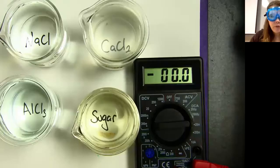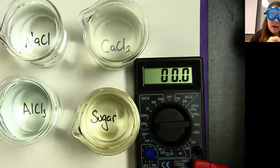So I have here four solutions. All four solutions are the same concentration. They're all one molar solution: sodium chloride, calcium chloride, aluminum chloride, and sugar. And what we're going to do is test the conductivity of each of these to see how easily electrons go through these solutions.